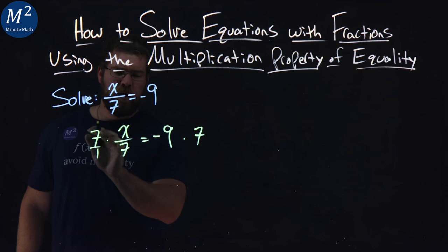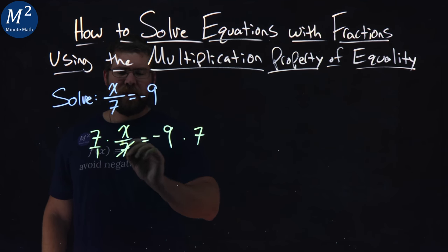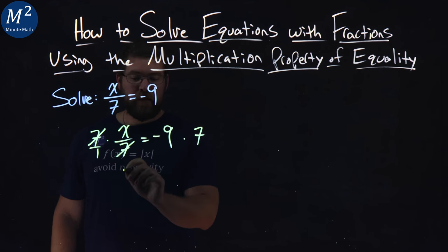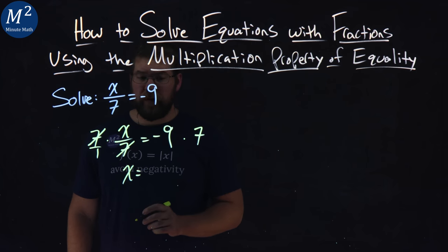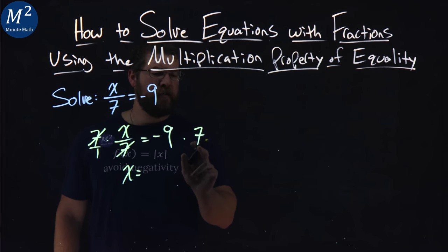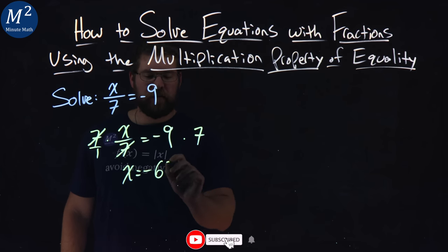Remember, 7 over 1 is the same as 7. These 7s cancel, leaving me with x by itself. On the right-hand side, negative 9 times 7 is negative 63.